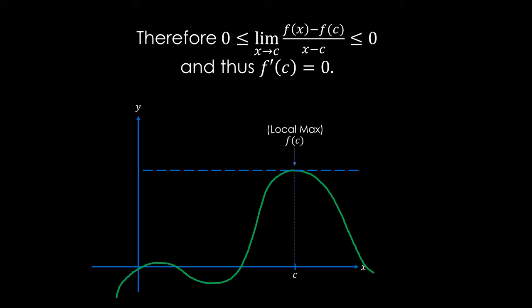We can then combine these two one-sided limit inequalities that we have to find that 0 must be smaller than or equal to the derivative of point c by first principles, which is smaller than or equal to 0, and therefore the logical conclusion is that the derivative at point c must be equal to 0.